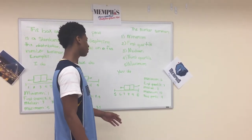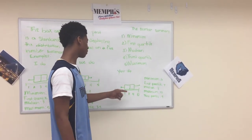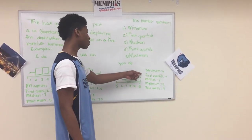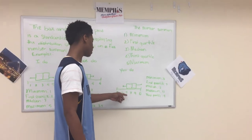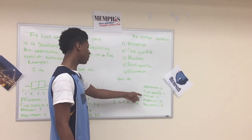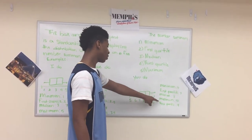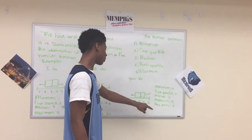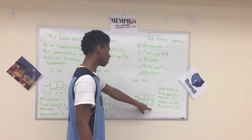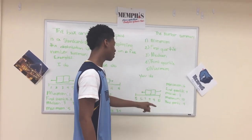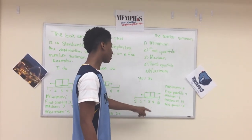On this problem, your minimum is six. Your first quartile is seven. Your median is eight. Your maximum right here is going to be ten. And your third quartile is going to be nine.